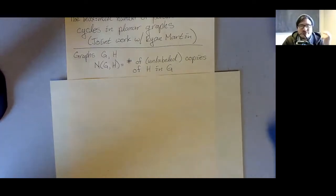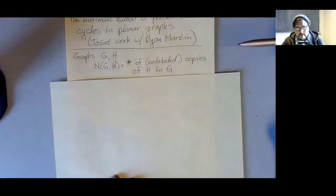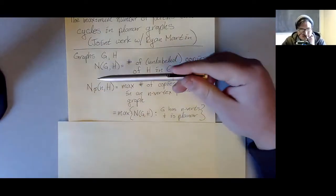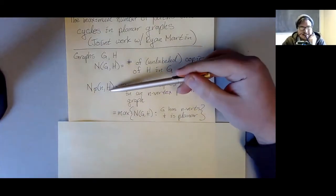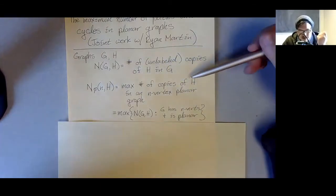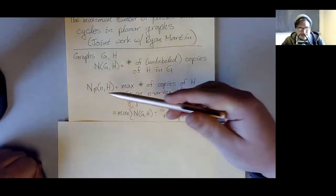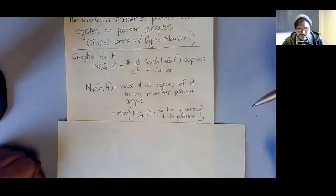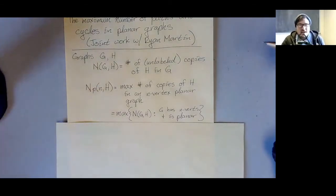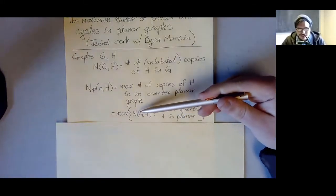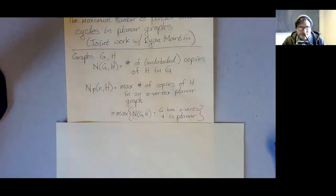So a clique has every graph on that number of vertices as a copy. The actual question we're interested in is a parameter called n sub P of n comma H, which is the maximum number of copies of graph H that can appear in an n-vertex planar graph. The curly P is just my notation for the set of all planar graphs. This is the same as the maximum of all n(G,H) where G is an n-vertex planar graph.